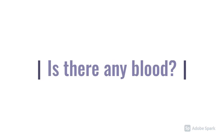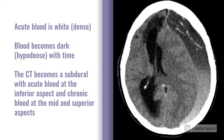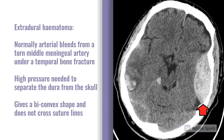Starting with: is there any blood? As mentioned, acute blood is white and dense, but it does become darker with time. The image gives a good example of how the colour of blood can change. At the bottom of the picture in the inferior aspect, we see acute blood which looks white, very light grey. And then as you go to the superior aspect, we see that the blood becomes darker until close to the top it is essentially black.